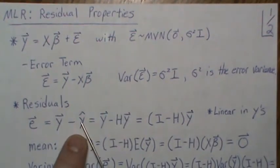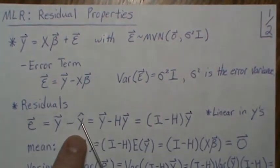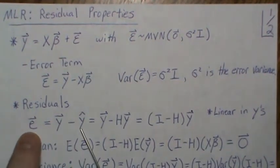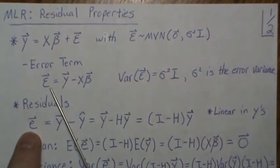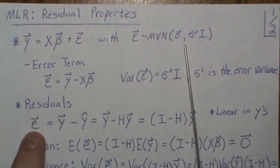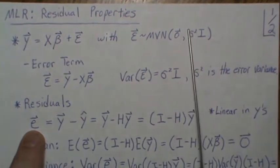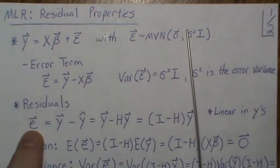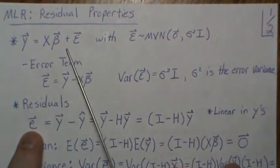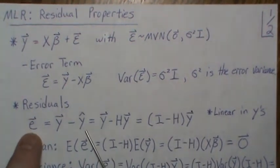We hope that these residuals behave like the error terms, or at least follow the assumptions on the error terms. If these don't follow these assumptions, at least roughly, then we think that the model assumptions are wrong and we need to rethink how we model the data.